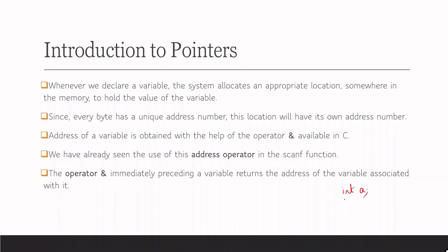For example, if we declare a variable 'int a', writing just 'a' means the particular value stored in that variable will be accessed. But if we write '&a', that shows the address of 'a'. So the '&' symbol is called the address operator — writing '&' just before a variable returns the address of that variable.